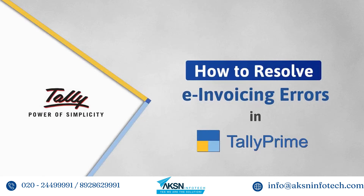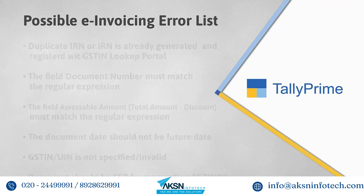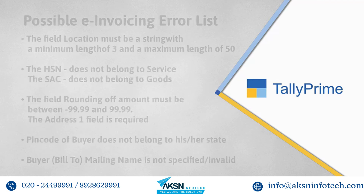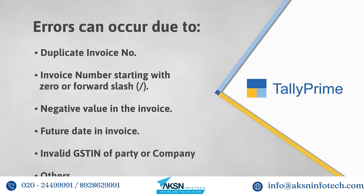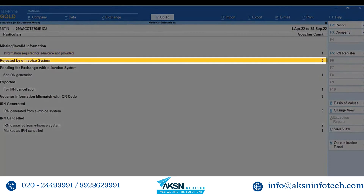Welcome to Tally help videos. In this video you will understand the process of identifying errors occurred in e-invoicing and resolve them to generate e-invoices seamlessly. The video covers errors in e-invoicing that can occur due to reasons such as use of duplicate invoice number, an invoice number starting with zero, a negative value in the invoice, a future date in the invoice, or an invalid GSTIN of the party or company due to incorrect format or presence of special characters.